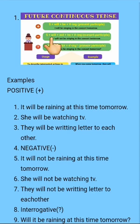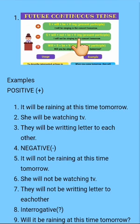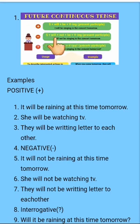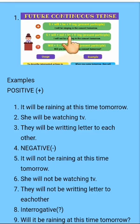In the negative sentences, subject plus will plus not plus be plus verb first form then ing then object. Subject de naal will aega, then not aega, then be aega. Jo not hai oho be toh pehla aega, then ashi be use karaange.